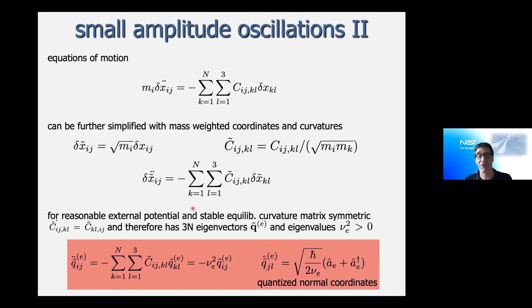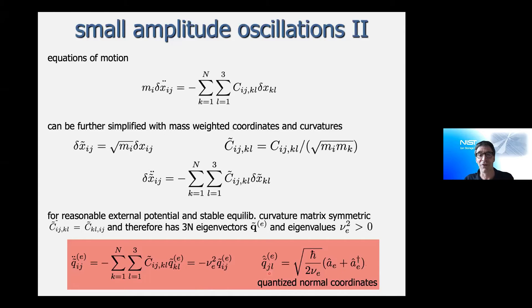With mass-weighted coordinates you have just the second time derivative on one side and a symmetric matrix times the displacement on the other. Since the equilibrium is stable — necessary for the ions not to fly away — you can solve this to get eigenvalues and eigenvectors. The eigenvalues are called normal mode frequencies and the eigenvectors are normal mode vectors. Instead of a horribly coupled system, you find coordinates q that diagonalize the problem, giving independent normal modes. At this point you can also move to a quantum mechanical picture by replacing classical amplitudes with quantum operators.